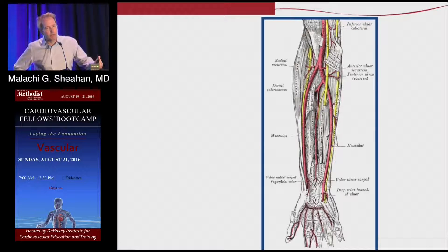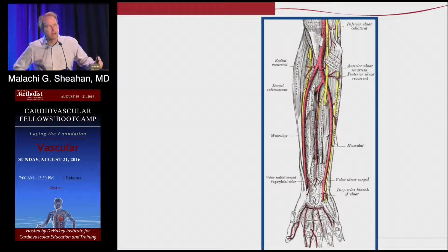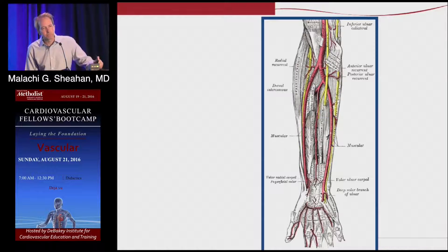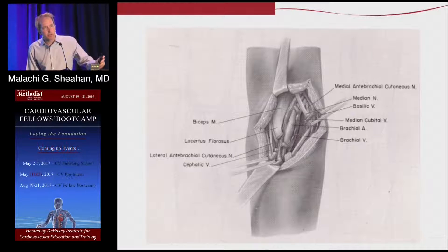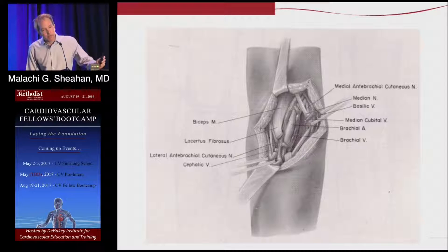The arterial anatomy of the forearm is radial, ulnar, and interosseous. An important variant is that some people have a very well-developed deep brachial artery that connects directly to the radial. If you're doing an antecubital dissection looking for the brachial artery and it seems a bit small and superficial, it might actually be a persistent deep brachial artery going directly into the radial — it can be used for access but is smaller and lower flow. When exposing the brachial artery, there is an aponeurosis crossing it that can be divided with no disability, but what can't be divided is the median nerve, which lies medial to the artery in the antecubital fossa.